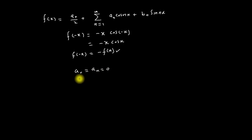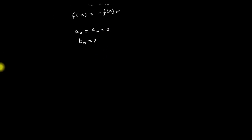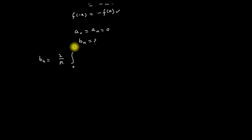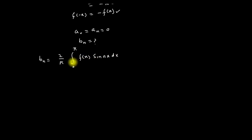We know that in the case of an odd function, the values of a₀ and aₙ are both equal to zero. Here we only need to find the value of bₙ, and the equation for bₙ is equal to (2/π) times the integration from 0 to π of f(x)·sin(nx)·dx.